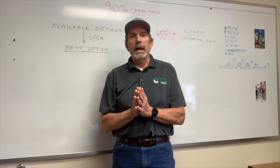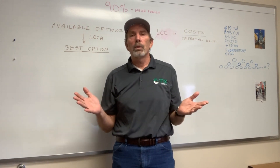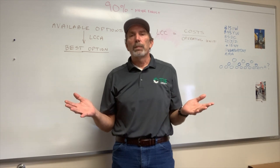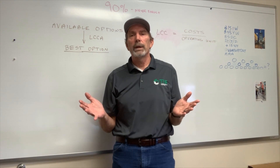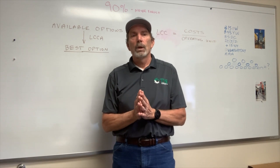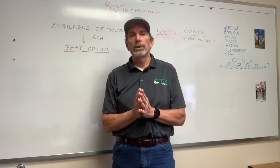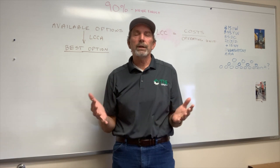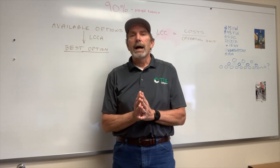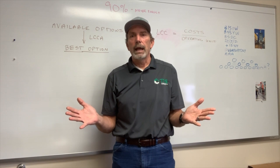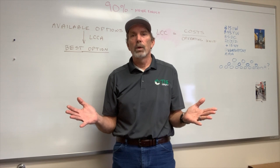First, we calculate all direct and indirect costs of a part or unit. We include the purchase price, repair cost, and support hardware cost, as well as other costs that we incur in the operation and maintenance of said part. We also calculate a time or utilization period, which is typically given in fired hours or fired starts. Then we divide all of our costs by this time value, giving us a dollar per hour or dollar per start cost for the component or unit in question.